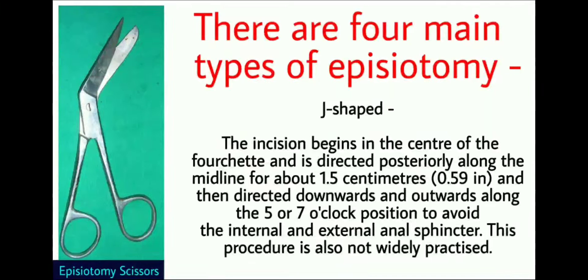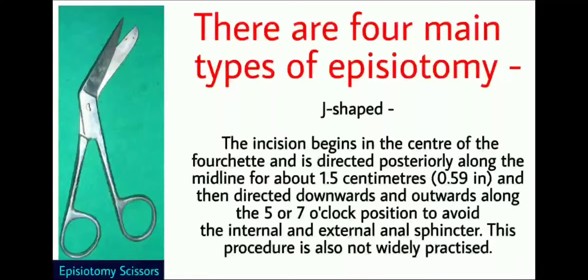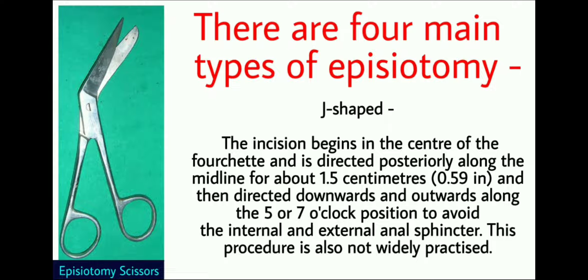The 4th type is J-shaped Episiotomy. In this type, the incision begins in the center of the fourchette and is directed posteriorly along the midline for about 1.5 cm, then directed downward and outwards along the 5 or 7 o'clock position to avoid the internal and external anal sphincter. This procedure is also not widely practiced.